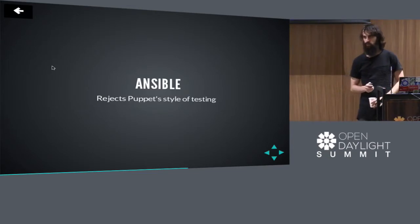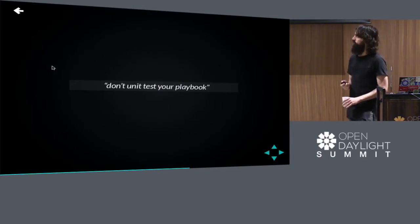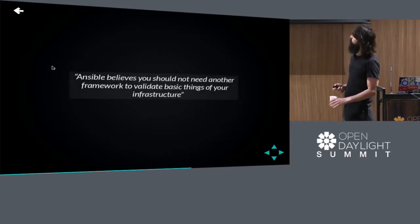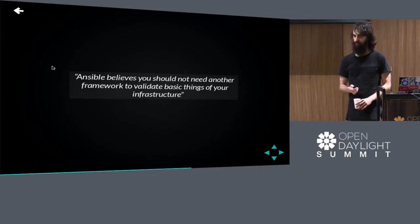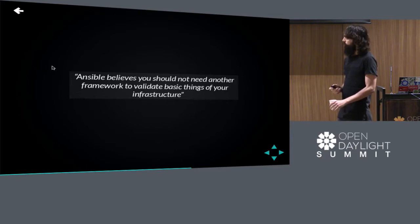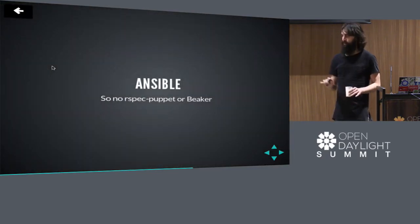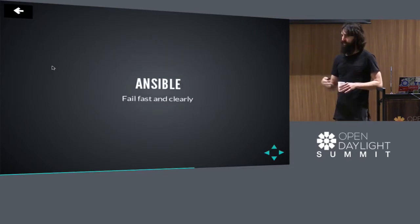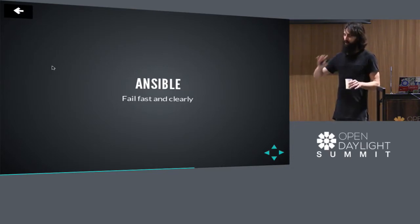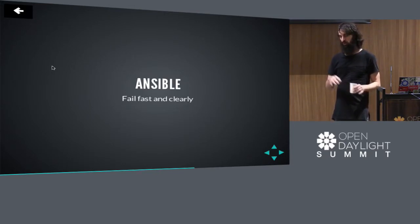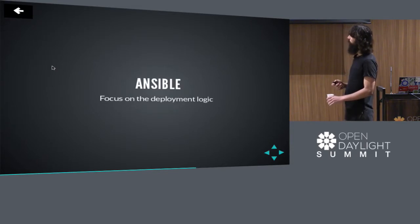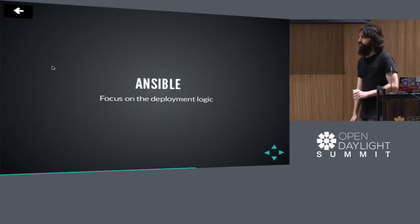One reason it's so simple is because Ansible rejects Puppet's style of testing. These are direct quotes from the documentation: 'Don't test your playbooks.' Ansible believes you should not need another framework to validate basic things about your infrastructure — kind of a jab at Puppet. There's no RSpec Puppet or Beaker-level testing. They really focus on failing fast and cleanly and making the failure obvious to the developer. Your test is your deployment against a VM, and the failure messages are not obtuse like Puppet's, so you don't need as much help to figure out what went wrong.